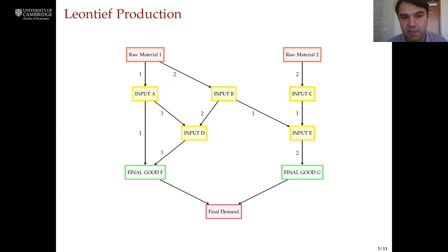In this diagram we take a simple hypothetical economy that produces five intermediate goods, A through E, and two final goods, good F and good G. An arrow that goes from here, raw material one, to input B represents that you need raw material one to produce input B, and the two labeled next to the arrow represents that you need two units of raw material one to produce one unit of input B. So in order to produce input D we need to combine three units of input A with two units of input B and so on.